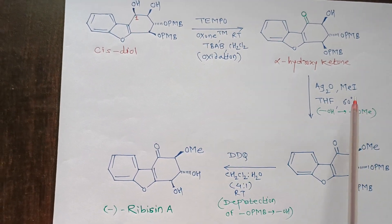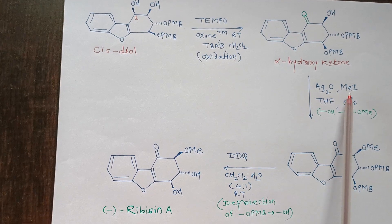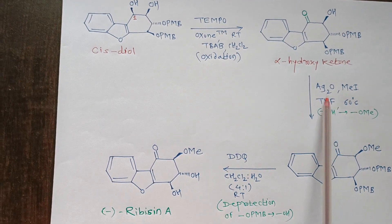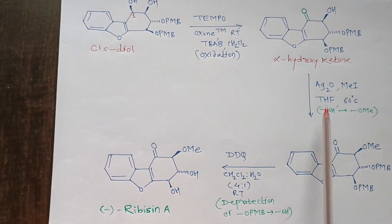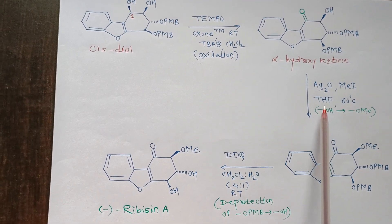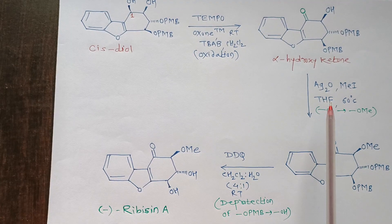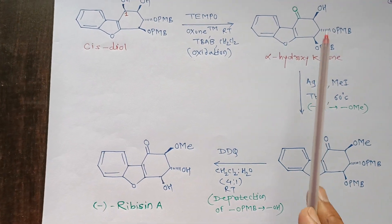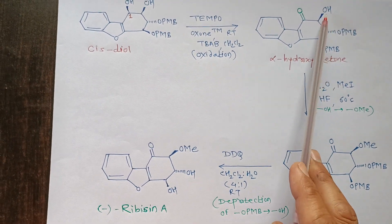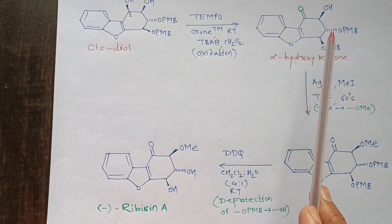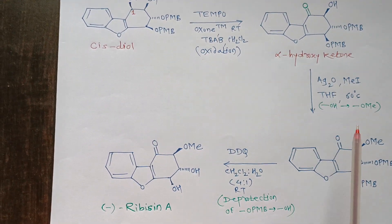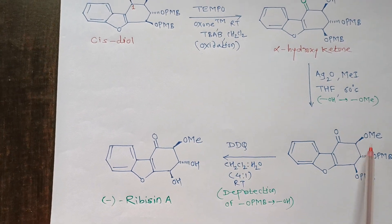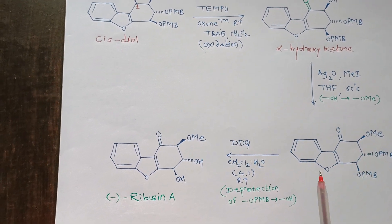Conversion of this alpha-hydroxy ketone into a methyl ether was done using methyl iodide in the presence of silver oxide in THF solvent. This is a simple methylation reaction — the OH undergoes methylation to the corresponding OMe, that is, the methyl ether.